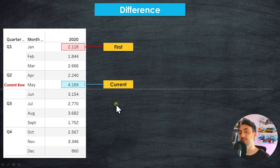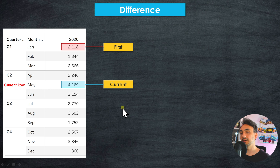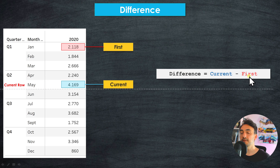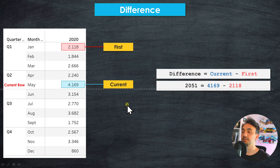Moving on to the third option, we can compare the current month with the first value in the table. So if we define 'first' in Tableau, it will find the difference between the current sales — for example May — and the first month, January, then subtract the values.